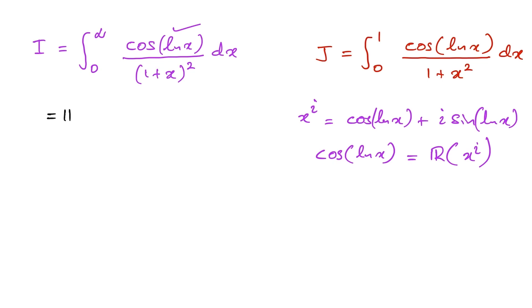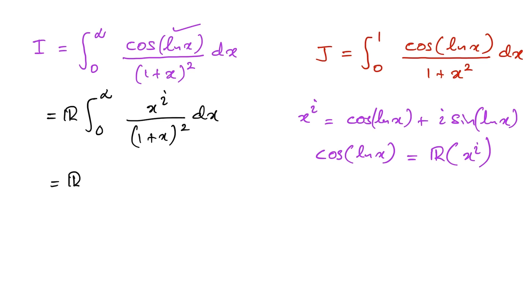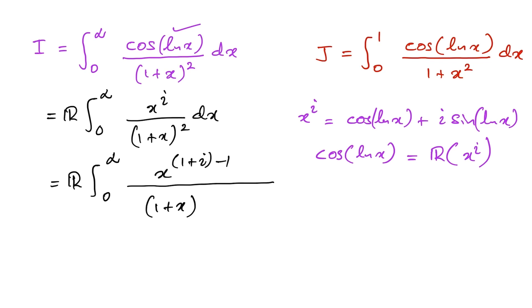We can write our integral as the real part of the integral from zero to infinity of x to the i over (1 plus x) squared dx. Now I'm going to use the beta function, so I'll rearrange the powers: x to the (1 plus i minus 1) over (1 plus x) to the (1 plus i plus 1 minus i).